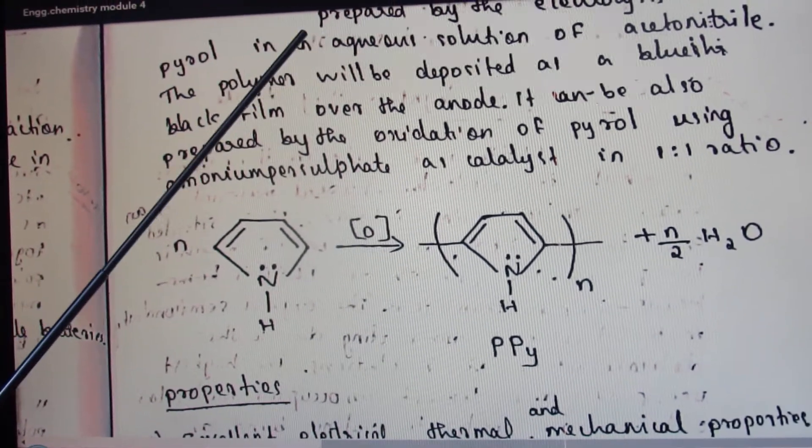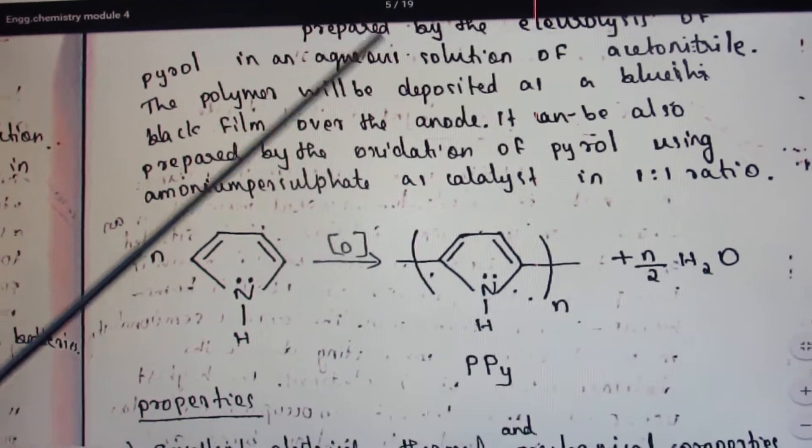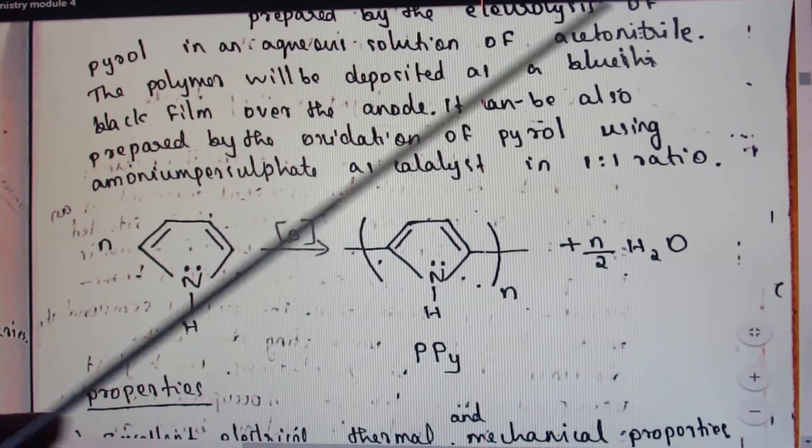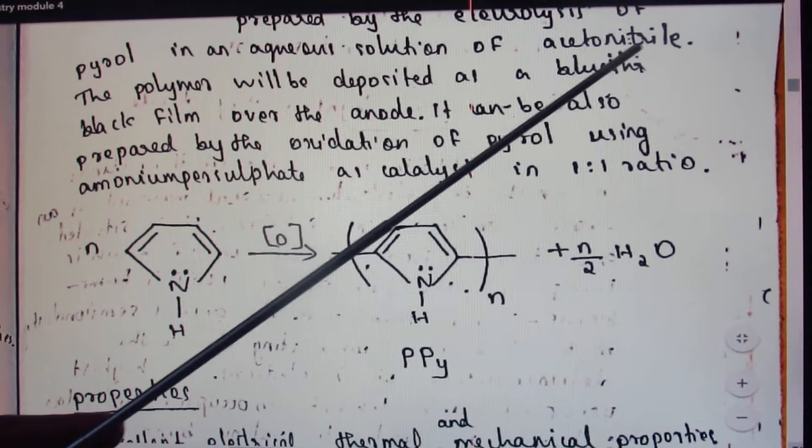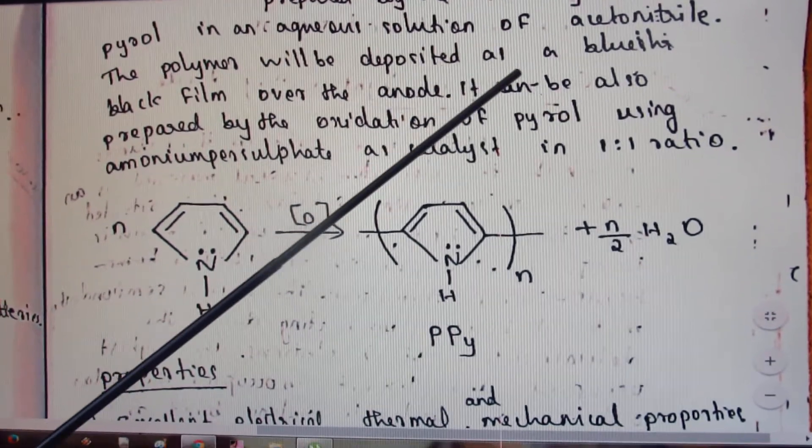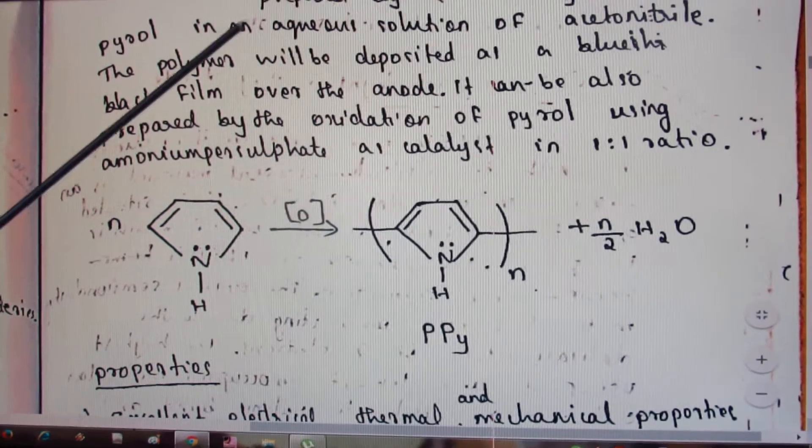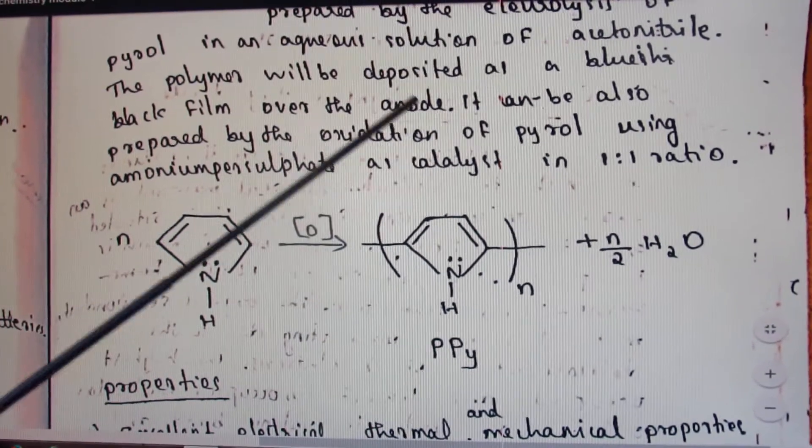We can study the preparation of polypyrrole. It is prepared by the electrolysis of pyrrole in an aqueous solution of acetonitrile. The polymer deposits as a blue-black film over the anode.